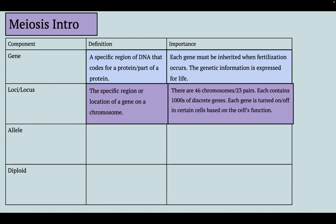The reason why we care about location or loci is that there are 46 chromosomes, or 23 pairs, in your cells. 23 pairs means in each pair you have one chromosome from mom and one from dad. Each of those contains thousands of discrete genes which can be turned on or off in certain cells, locations, or environments. Understanding the location of the gene is really important for understanding its structure, function, and why that gene is contributing to a certain process in our cell.